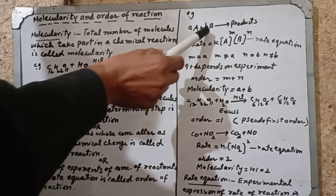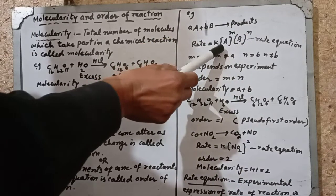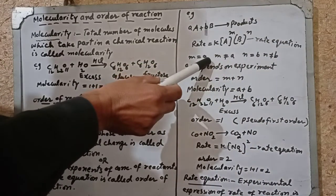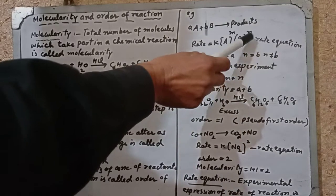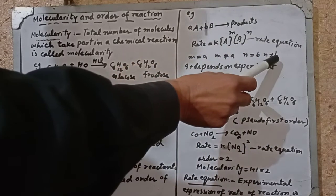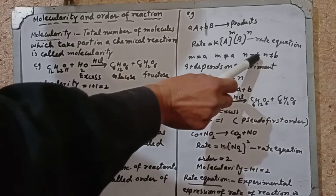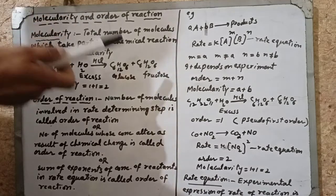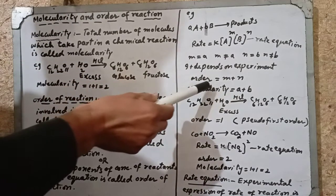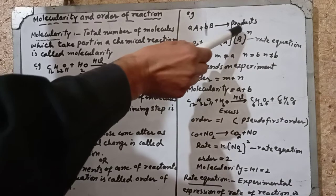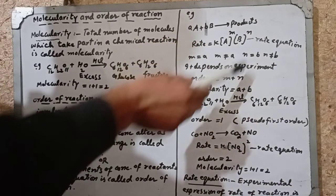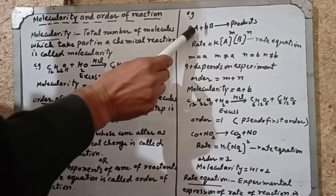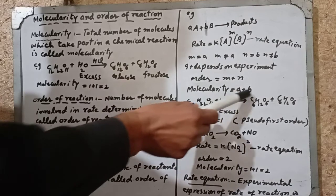For a general reaction: a moles of A plus b moles of B gives products. The rate equation is: Rate = k[A]^m [B]^n. Here m may or may not equal a, and similarly n may or may not equal b — it depends on the experiment. When you increase the concentration and observe how many times the rate increases, you determine m and n. So the order = m + n, while molecularity = a + b.